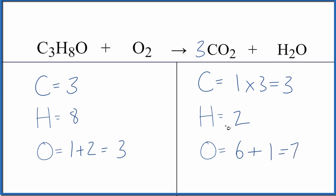Let's fix the hydrogens. We could put a coefficient of four in front of the H2O - two times four. That would give us eight, and we've balanced the hydrogens, but we need to update the oxygens again. So we have three times two, that's six, plus four times one, that's four. Now we have ten oxygen atoms.